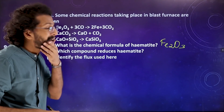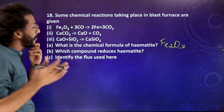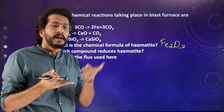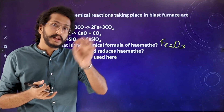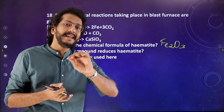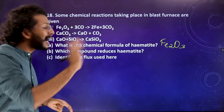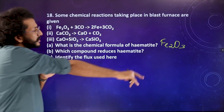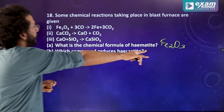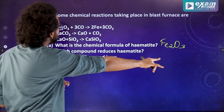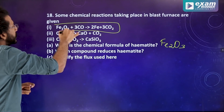Which compound reduces hematite? We are going to use coke. C plus O2 gives CO2, and CO2 plus C gives CO — carbon monoxide. Carbon monoxide then reacts with Fe2O3 to reduce it.